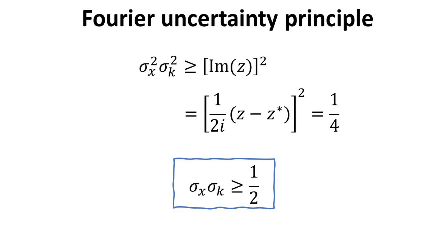Since the standard deviation is by definition positive, then the σx and σk product must always be larger or equal to half. This is the famous Fourier uncertainty principle.